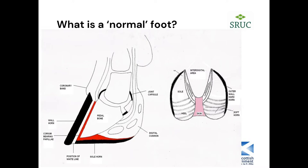Looking at the normal foot, there are various structures in which disease can affect. At the top is the coronary band — the junction between skin and horn — then you have the wall coming down to the ground, the sole coming back towards the heel, digital cushions, and the joints between bones. Because the foot is encapsulated in horn, an infection there can really throb — there's nowhere for the swelling to go, similar to having an infection under a fingernail.